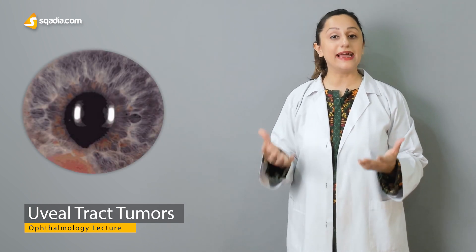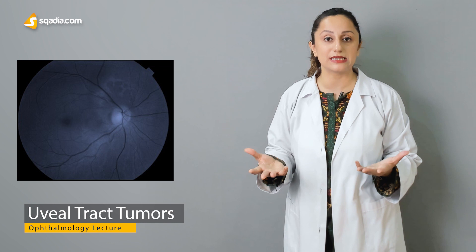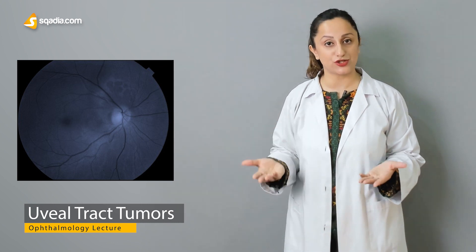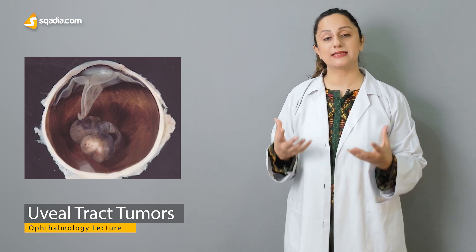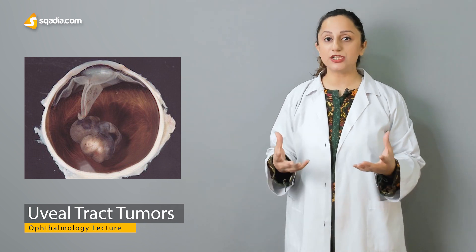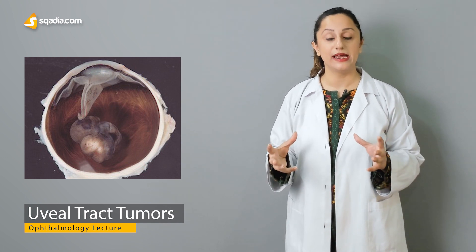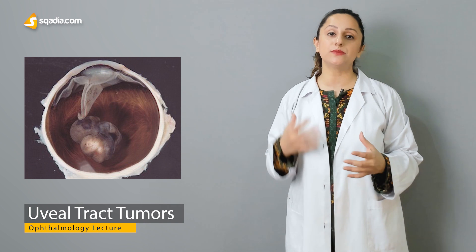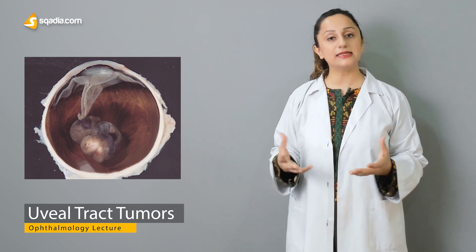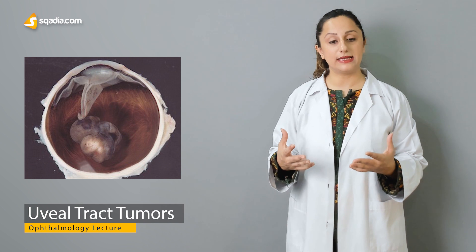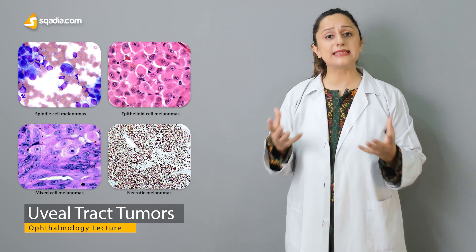First, we'll be discussing the tumorous conditions of the choroid. The benign conditions mainly include nevi and hemangiomatous conditions involving tumors of the vascular structures. On the other hand, we have melanocytes when malignant-producing cells are involved. We'll cover the clinical features and treatment modalities that can be applied to these conditions.